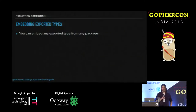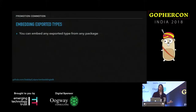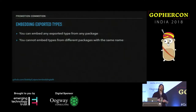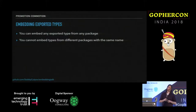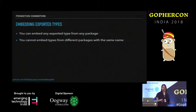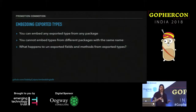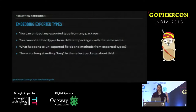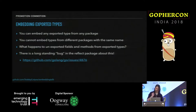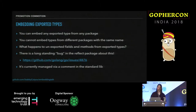You can embed any exported type from any package. You can't embed unexported types from packages you don't own. You also cannot embed types from different packages with the same name — if package T and package P both expose a type with the same name, you can't embed them both into the same struct, because the unqualified name is what gets used when that struct is created in memory. What happens to unexported fields and methods from exported types? There was actually a long-standing bug in the reflect package about this — check out issue 4876. It was fixed with what I think is one of the most Go ways to fix a problem: a comment saying 'you shouldn't do this, it's broken as intended.'